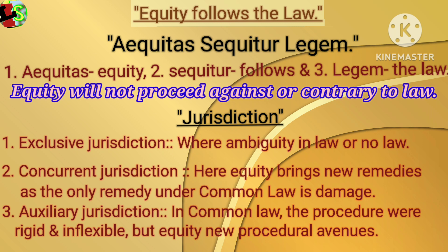The jurisdiction of equity can broadly be divided into three heads: 1. Exclusive jurisdiction, 2. Concurrent jurisdiction, and 3. Auxiliary jurisdiction. Under exclusive jurisdiction, equity plays an independent role where there is no law or there is ambiguity in the prescription of law.